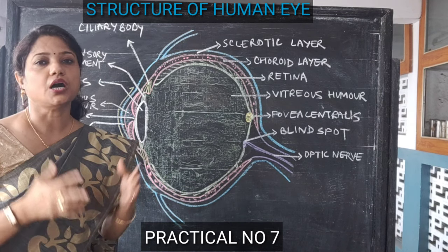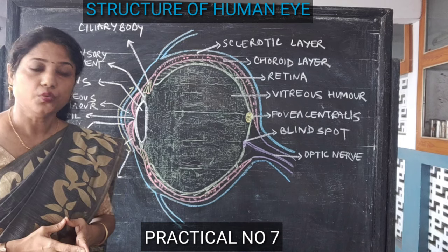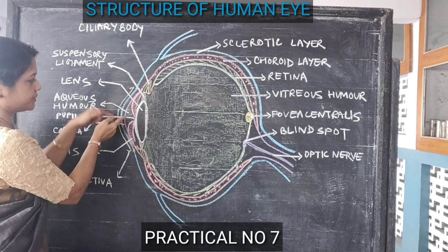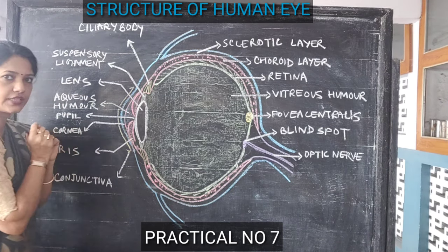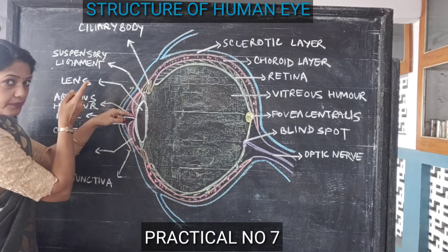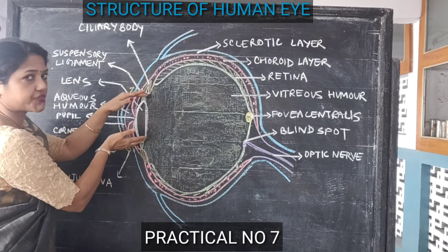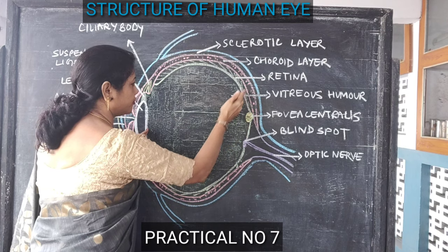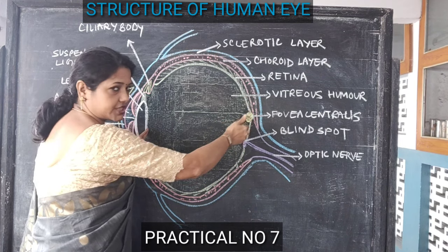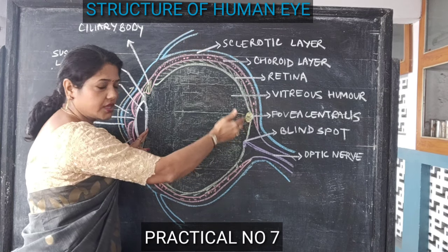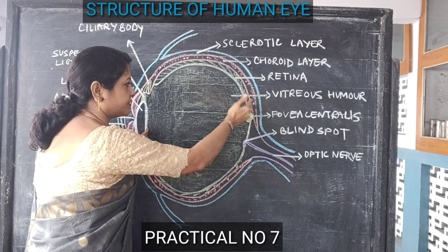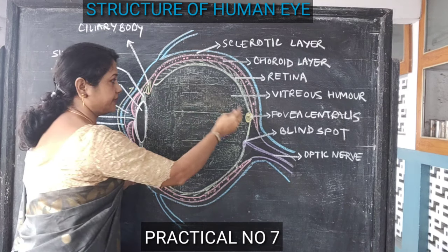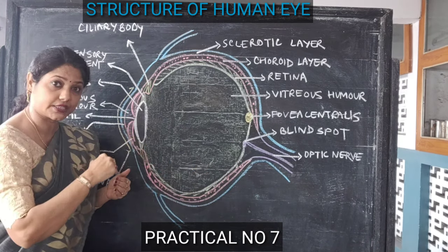Now let us see how our eye functions. When the light rays fall on the cornea, they get a little bit converged. Then, through the aqueous humor and through the pupil, it falls on the lens. When the light rays fall on the lens, the lens converges the light rays further and forces the image onto the fovea centralis on the retina, the inner layer of the eye. When the image is formed exactly on the fovea centralis, we are able to see the image very clearly. The image formed on the retina is inverted and real.